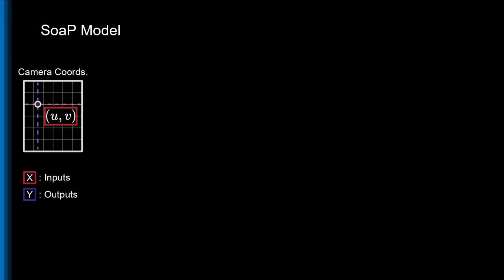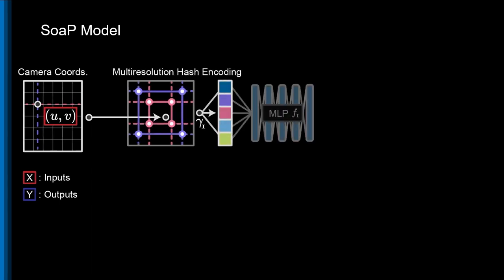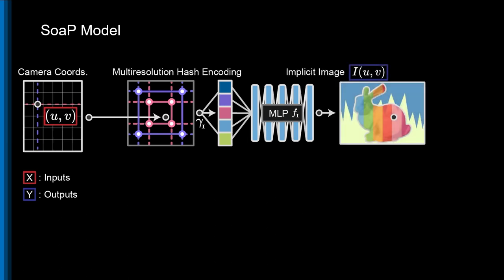We begin by sampling a point at coordinates UV and generate a positional encoding vector with a multi-resolution hash encoder. This vector is passed into a multilayer perceptron, an MLP for short, which implicitly represents a 3-channel RGB image.